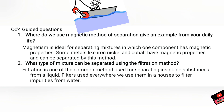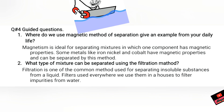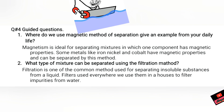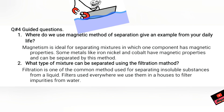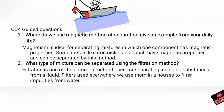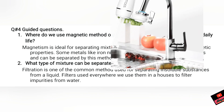Question: Where do we use magnetic separation? Give an example from your daily life. The answer is: Magnetism is ideal for separating a mixture in which one of the components has magnetic properties. Metals like nickel, cobalt, and iron have magnetic properties and can be separated by this method.